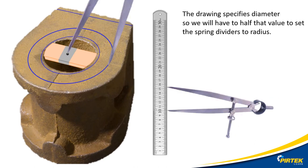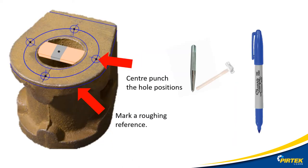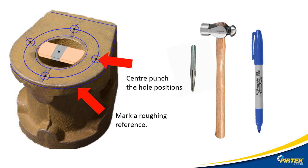Now let's scribe the bore diameter and the PCD diameter. Don't forget to set your dividers to the radius, which is half the diameter. Let's now mark the hole positions — it's the circumference divided by the number of holes, which is what you set the divider distance to. Let's center pop the hole positions and scribe a circle around each center pop — this will help make sure that when we're drilling the holes we are on track. I'll also create a roughing line so I don't have to keep measuring; I'll just rough machine into that line and take my first measurement from there.